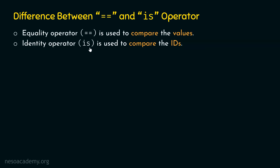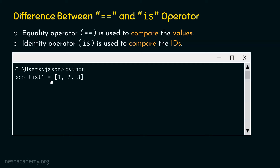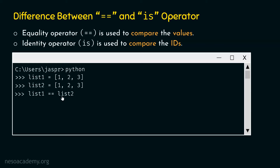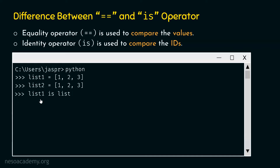Let's understand the difference with an example. We type list1 equal to [1, 2, 3] — a list with three items. list1 is a variable pointing to this object. Then we type list2 equal to [1, 2, 3]. These two lists are the same. Now, if we type list1 == list2, we are asking: is the object pointed by list1 the same as the object pointed by list2? Yes, these two objects are equal, so if we hit enter we get true.